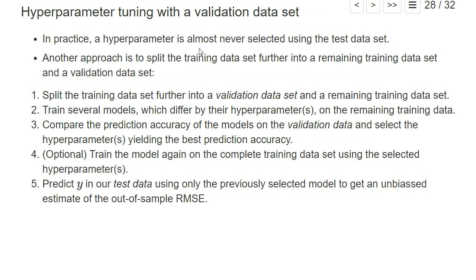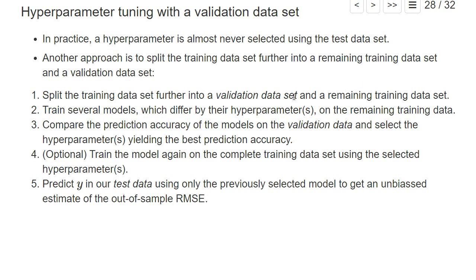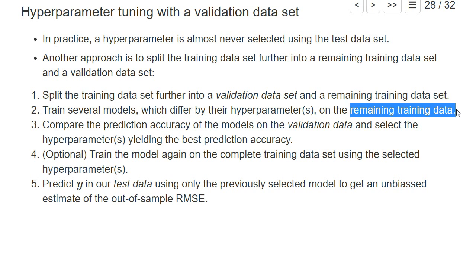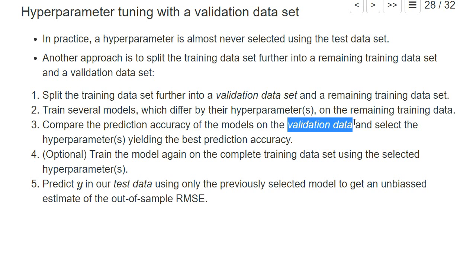But one can do something similar. We can split the training dataset again into two datasets: one so-called validation dataset, and a remaining training dataset. We again look at the grid of possible values of the hyperparameters and train each model on the remaining training dataset. Then we assess prediction accuracy on the validation data — not the test data — and select the hyperparameter combination with the best prediction accuracy. Then we train the model again on the complete training dataset using the selected hyperparameters.